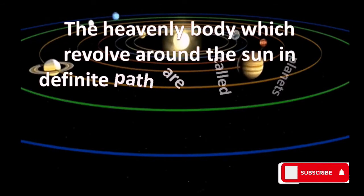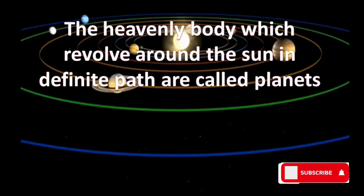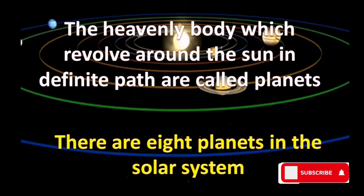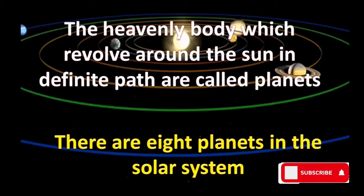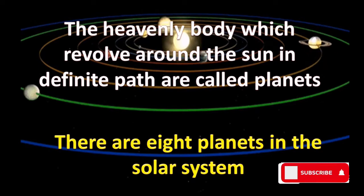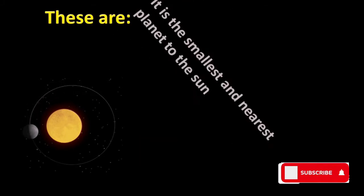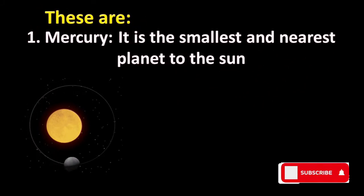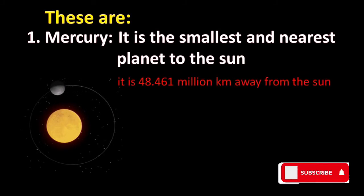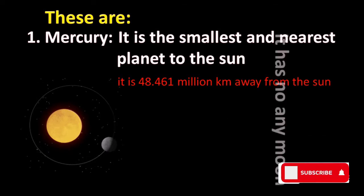The heavenly bodies which revolve around the sun in a definite path are called planets. There are eight planets in the solar system. The first is Mercury, which is the smallest and nearest planet to the sun. It is 48.461 million kilometers away from the sun and has no moon.